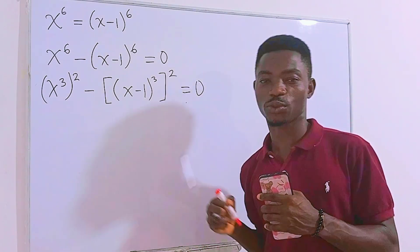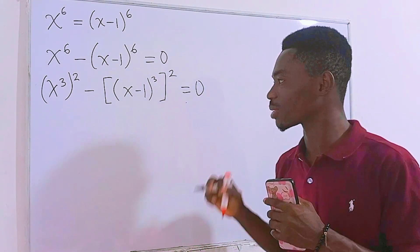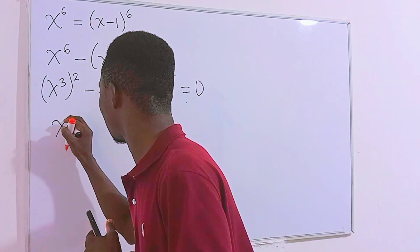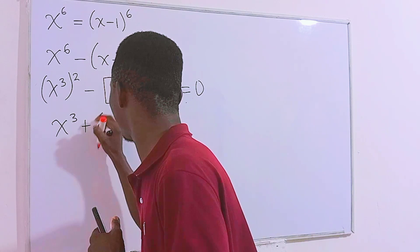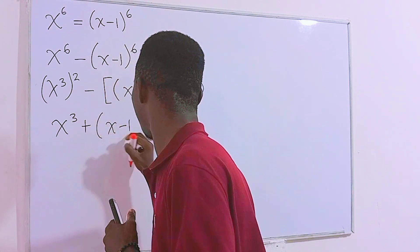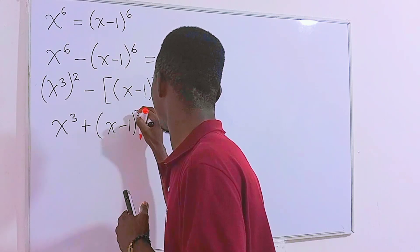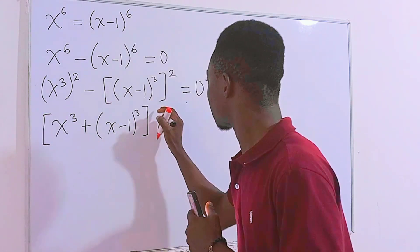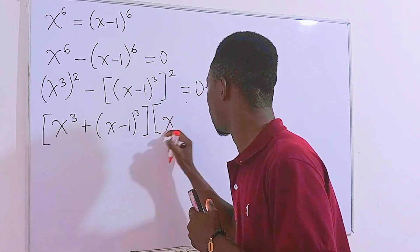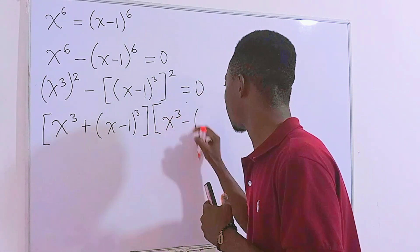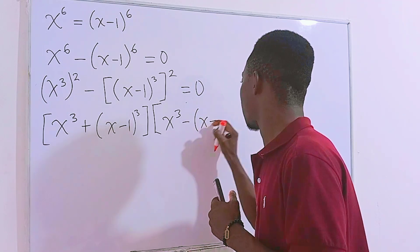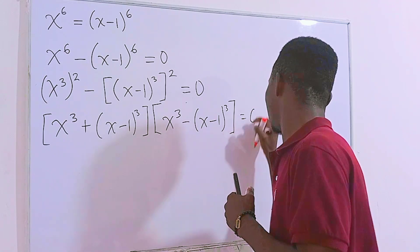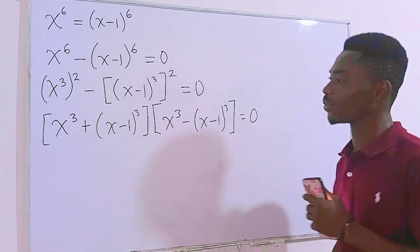And this time, we have a difference of two squares, which can be expressed as: x cubed plus x minus 1 all cubed, times x cubed minus x minus 1 all cubed, and of course this is equal to 0.